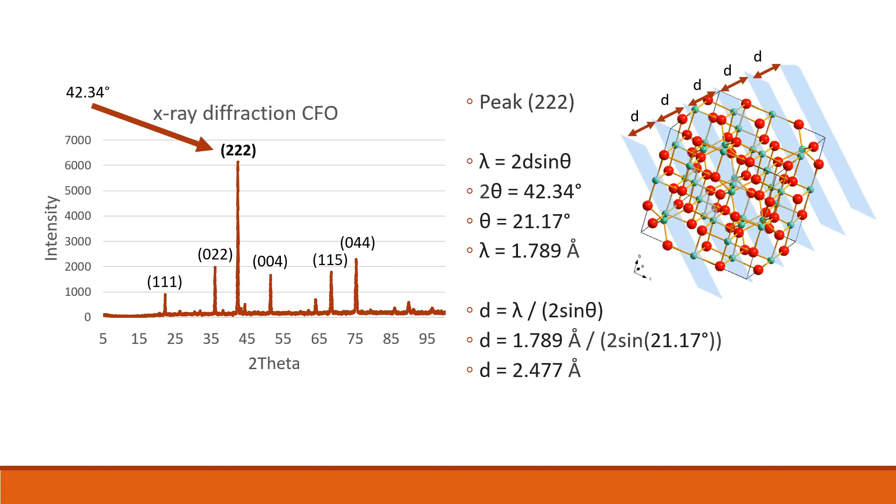We can look at the data again, but for the highest peak this time. This highest peak is for the plane 222 at the 2θ value of 42.34 degrees. Again, we can find θ from 2θ to be equal to 21.17 degrees, and we have the same λ value as before. So again we can plug that into Bragg's law and find that d is equal to 2.477 angstroms. This can again be visualized with this diagram here, where the d spacing is the spacing between each of the planes.